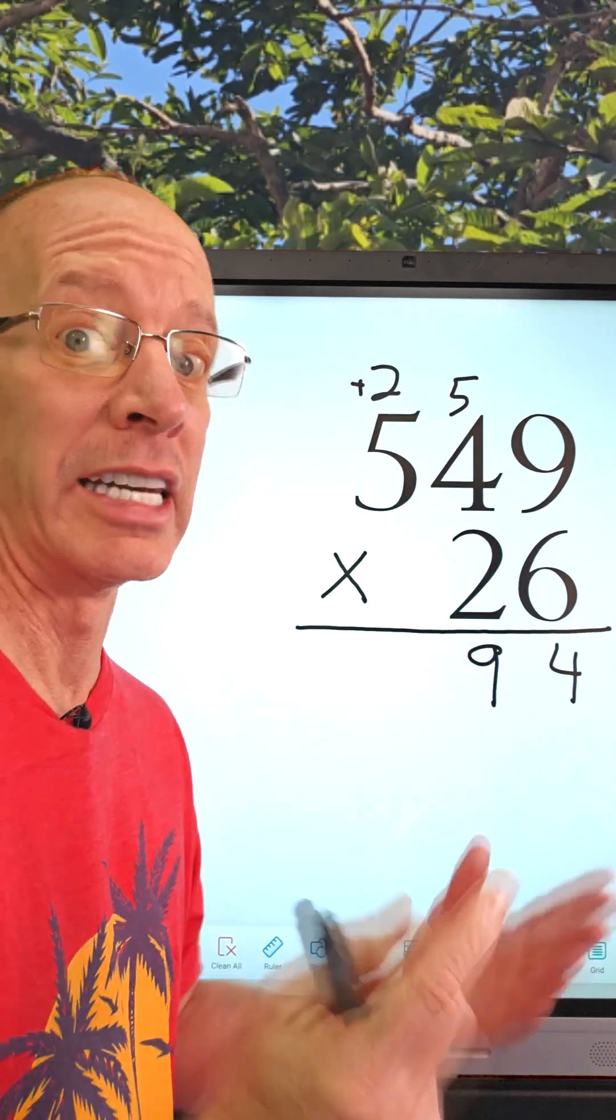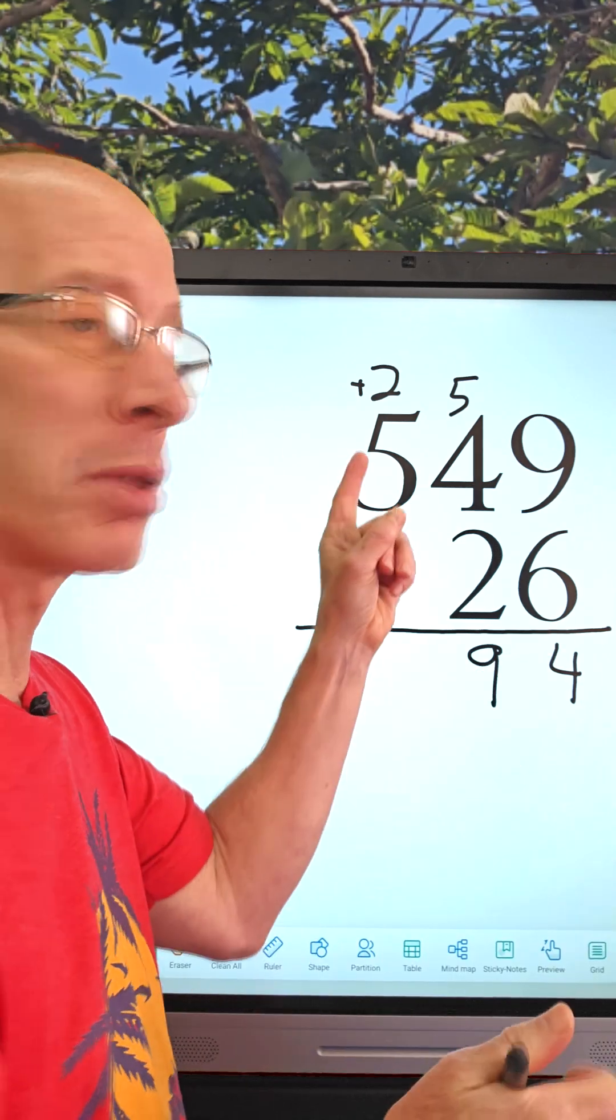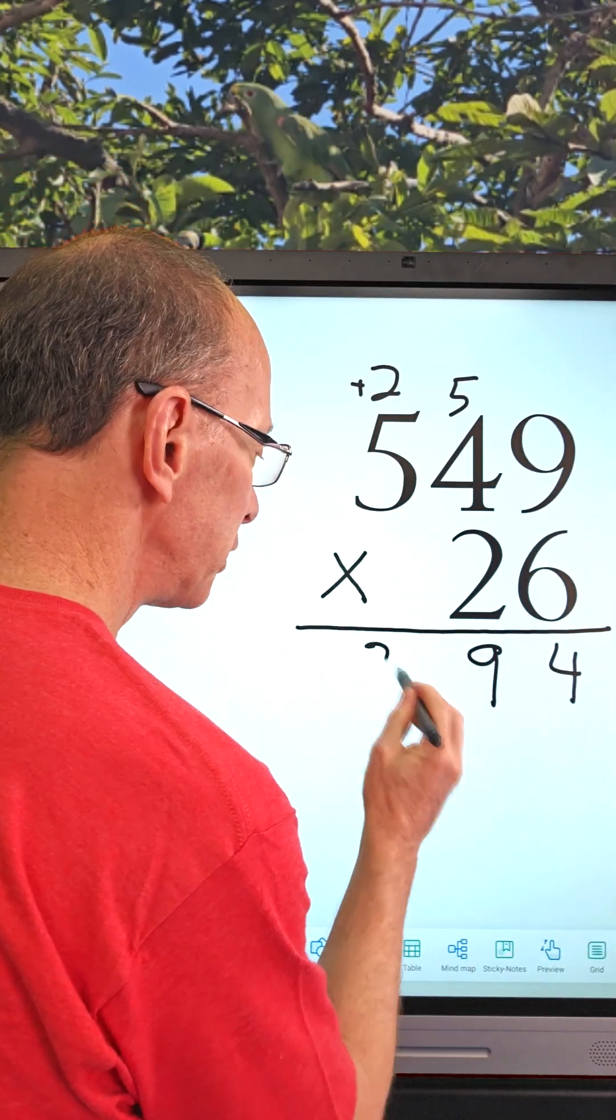Now we're going to take 6 times 5. What is 6 times 5? 30. 30 plus 2 is 32. So put 32 right here, 32 right there.